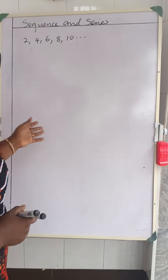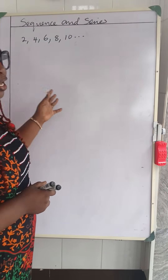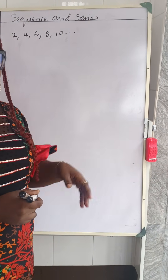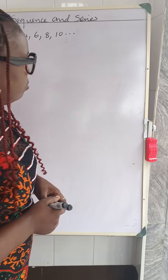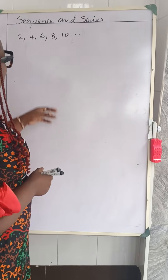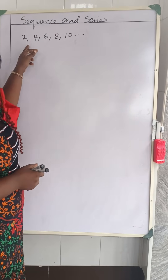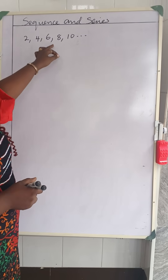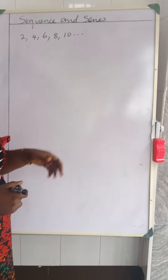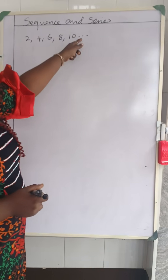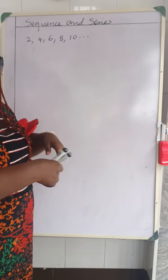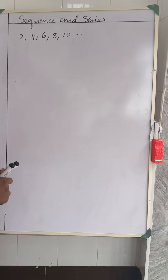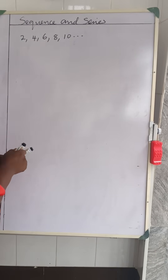Sequence can be in ascending or descending order. So we have two, four, six, eight, and ten. And this dot means it continues.